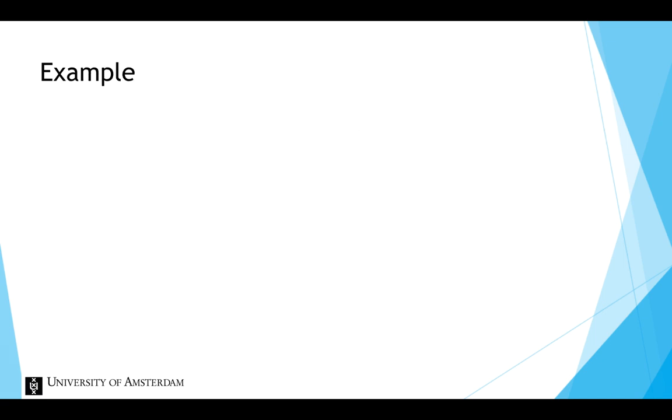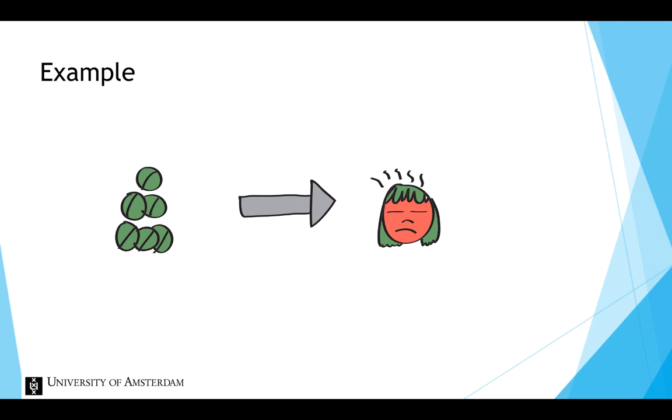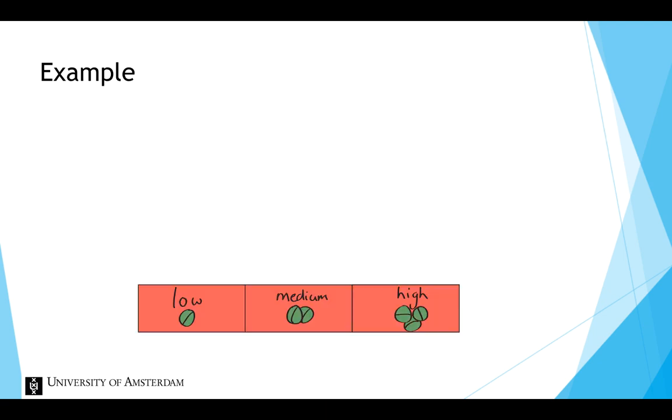Let's consider an example about investigating if a new drug reduces migraine attacks. We could create three conditions that differ in the dosage of the drug: low, medium, and high. And now we are able to investigate the effect of the factor dosage, the independent variable, on the number of migraine attacks, the dependent variable.